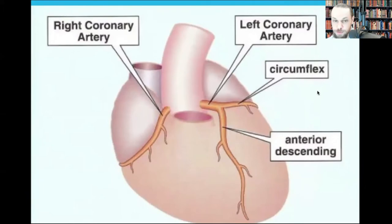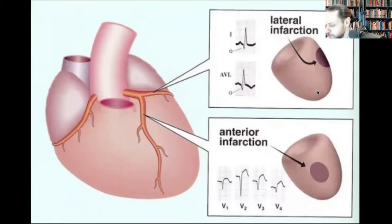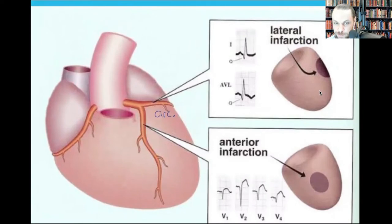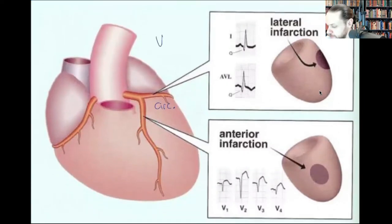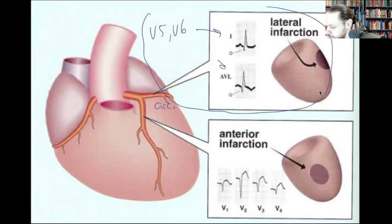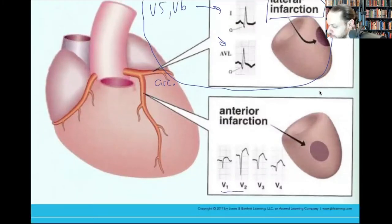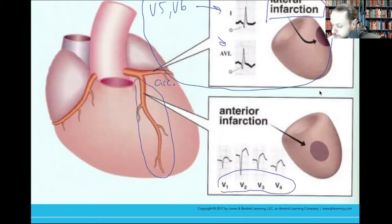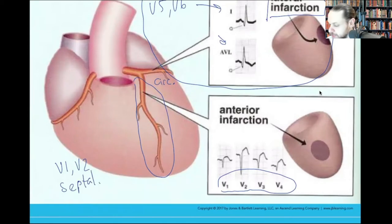Now let's look at how the 12-lead corresponds to coronary anatomy. The lateral wall is supplied by the circumflex — and on a circumflex infarction, you'll typically see elevations in V5, V6, lead I, and aVL. The anterior infarct is usually V1, V2, V3, V4. If you only have isolated V1 and V2, that's the septal wall — supplied by the left anterior descending.